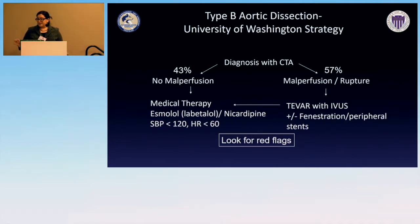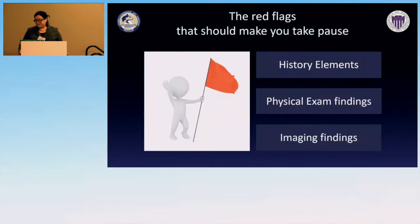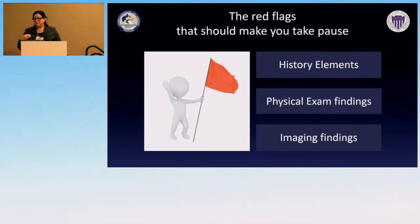We look for red flags, and part of the way we now think about these dissections is whether they are genetically triggered — not just, 'it's an aortic dissection.' There are definitely elements in the history, physical exam, and imaging findings that we have to process fairly quickly when somebody gets transferred to us.